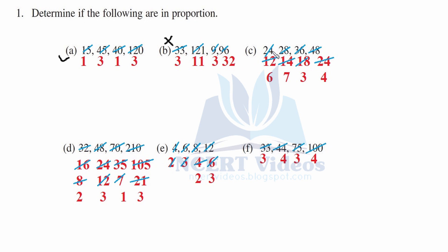Part c: 24 is to 28. Reducing: 12 to 24 and 14 to 28, further reducible to 6 to 12 and 7 to 14, giving 6 is to 7. Now 18 to 36 and 24 to 48: 3 sixes are 18 and 4 sixes are 24, giving 3 is to 4. Comparing 6 is to 7 and 3 is to 4 — they are not equal, therefore not in proportion.